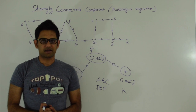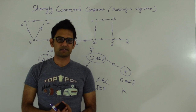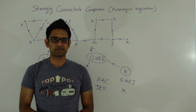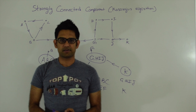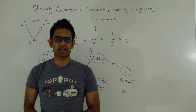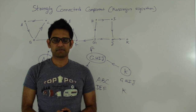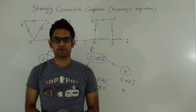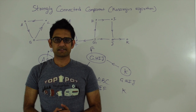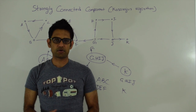Hopefully this gives you some intuition for why this algorithm works. The CLRS book has the full proof. In the next section let's quickly look at the code for this algorithm to find strongly connected components.